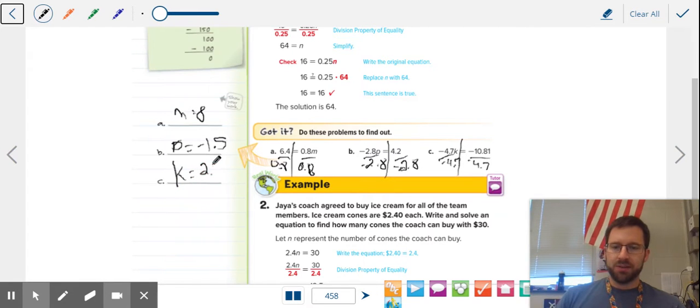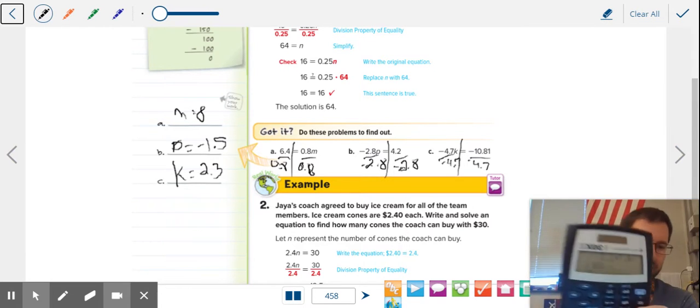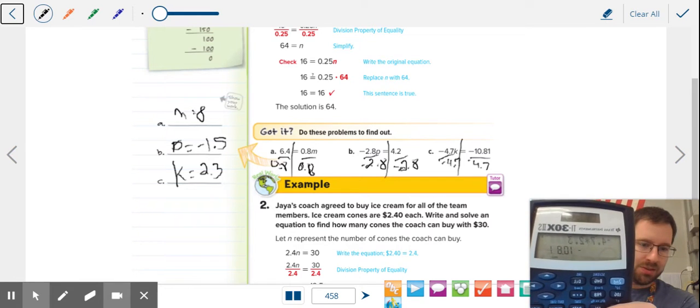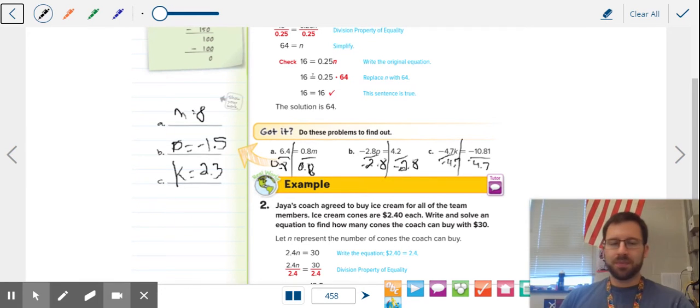Remember, you can be using a calculator this entire unit to check your work. I'm missing that check step so far, so let's just go back and check this one. It's always important to check to see what you get. So in this case, we did negative 4.7 times 2.3 is negative 10.81. All right.